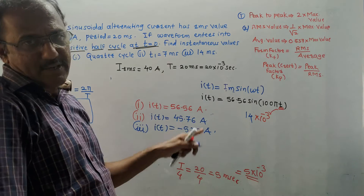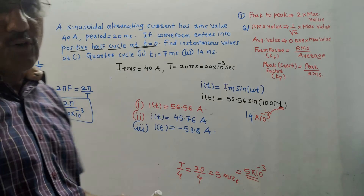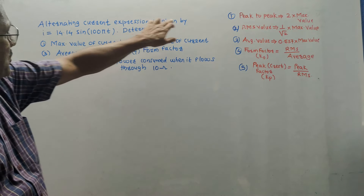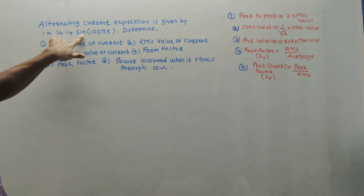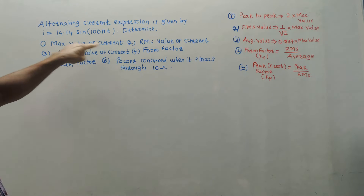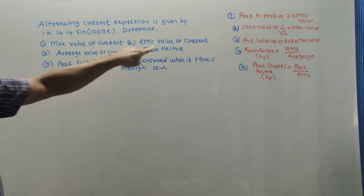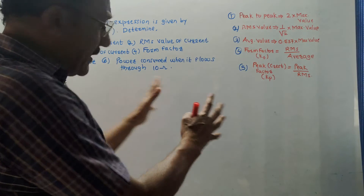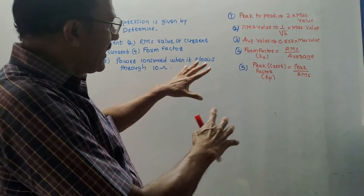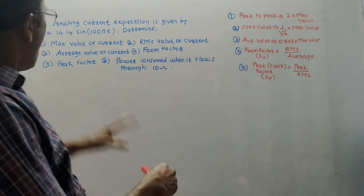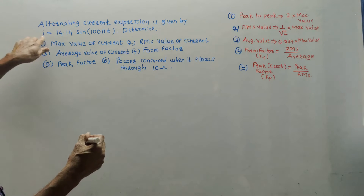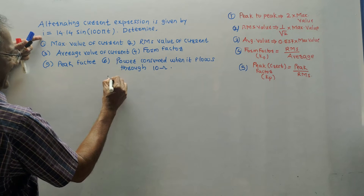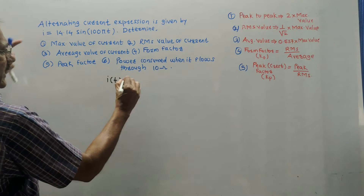Next numerical: an alternating current expression is given by i(t) = 14.14 sin(100πt). Determine: maximum value, RMS value, average value, form factor, peak factor, and power consumed when it flows through a 10 Ω resistance. I have selected this numerical so all the formula types are covered. The given equation is i(t) = 14.14 sin(100πt).